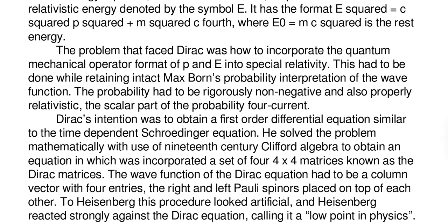The problem that faced Dirac was how to incorporate the quantum mechanical operator format of P and E into special relativity. These are the Schrödinger operators. This had to be done by retaining intact Max Born's probability interpretation of the wave function. The probability had to be rigorously non-negative and also properly relativistic, the scalar part of the probability four-current.